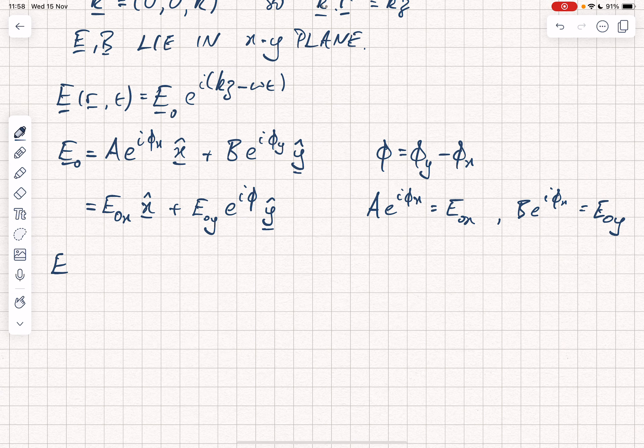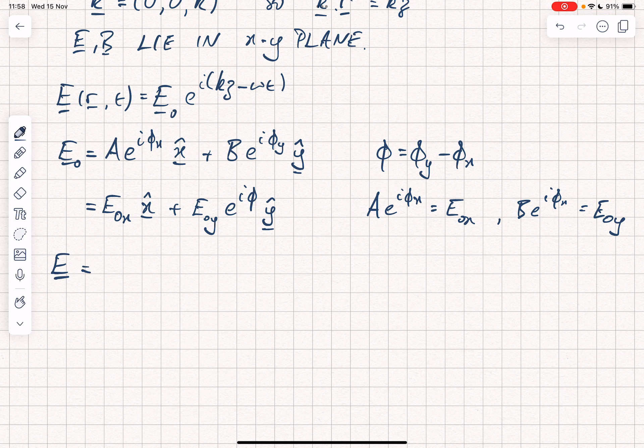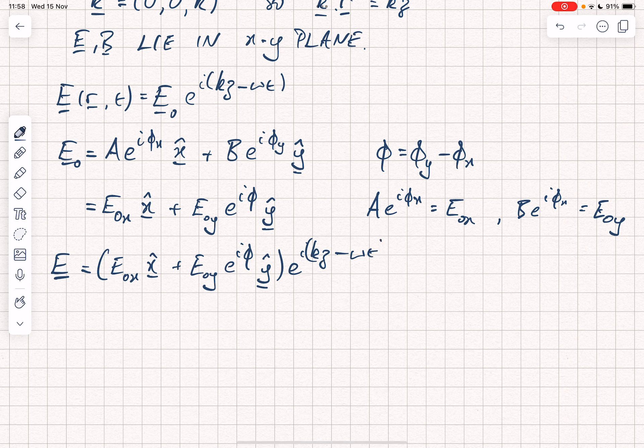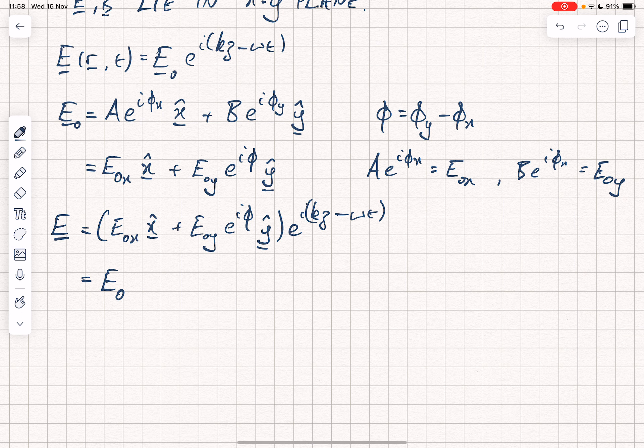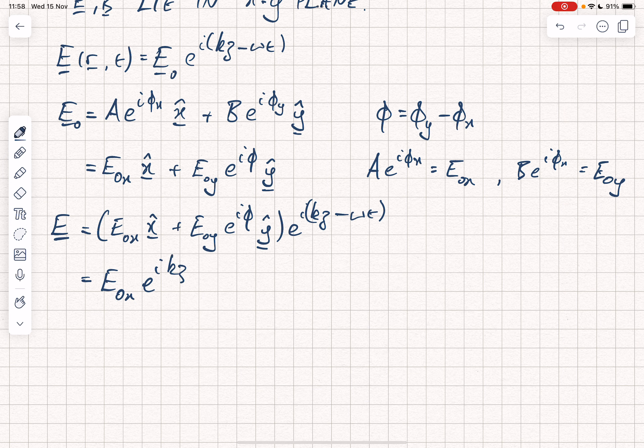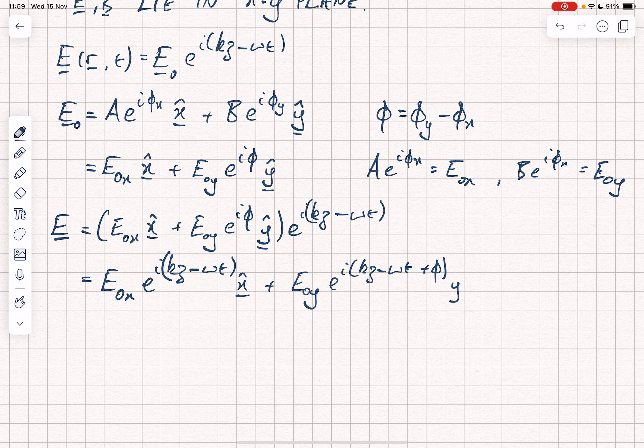Let's put that back into our equation. The electric field E equals E0x in the x direction plus E0y e to the i phi in the y direction, times e to the i(kz minus omega t). If you want to expand that out, you could write it as E0x e to the i(kz minus omega t) in the x direction plus E0y e to the i(kz minus omega t plus phi) in the y direction.